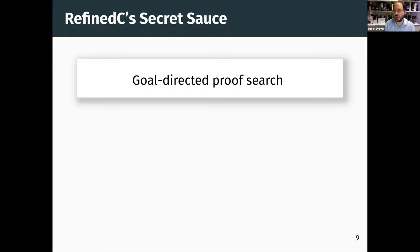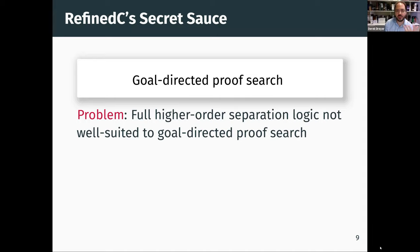Proof search is a very standard technique used widely in logic programming, for example, to reduce the goal to sub-goals in an automatic fashion. We're applying this very standard approach to automatic checking of separation logic.